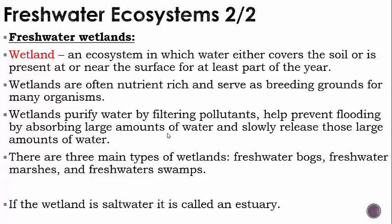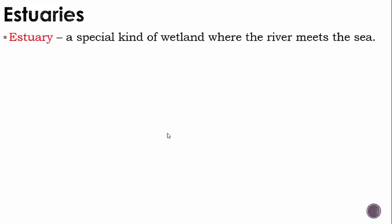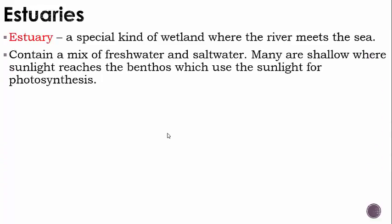There's a special type of wetland called an estuary. If the wetland has saltwater, it's called an estuary — a special kind of wetland where the river meets the sea. That's why it has saltwater. It contains a mix of freshwater and saltwater.